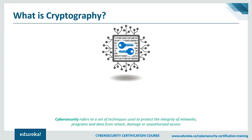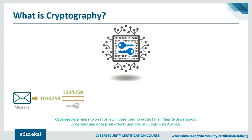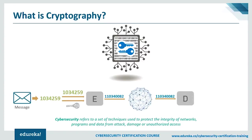Cryptography is the practice and study of techniques for securing communication and data in the presence of adversaries. A message is first converted into a numeric form, then an encryption key is applied in an encryption algorithm to produce ciphertext. The ciphertext is sent over the network, where the recipient uses a decryption key in a decryption algorithm to recover the original message — or get an error if the message was tampered with.